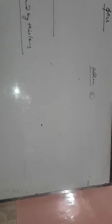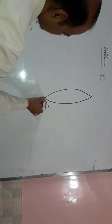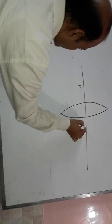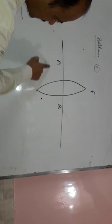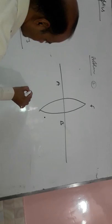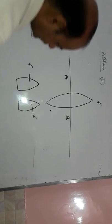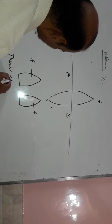Problem number 2. A bi-convex lens of focal length f is cut along AB. The focal length of pieces is f. There is no change in focal length.